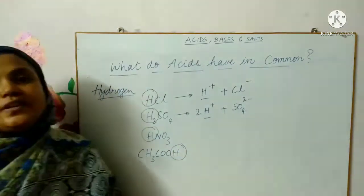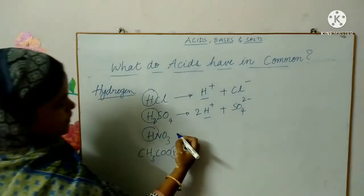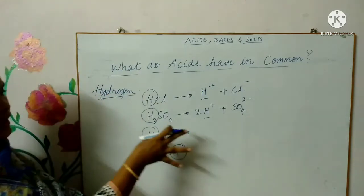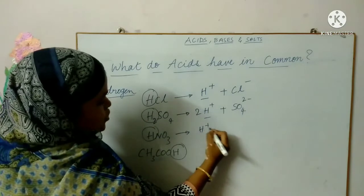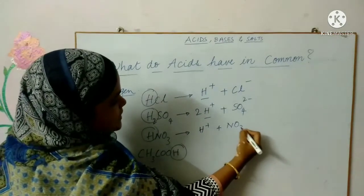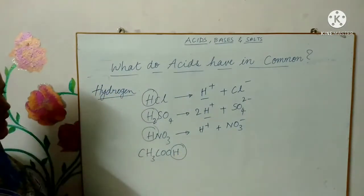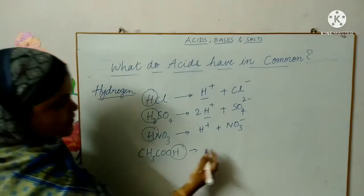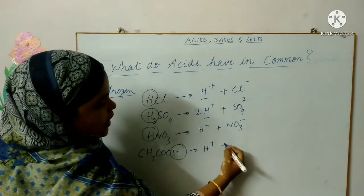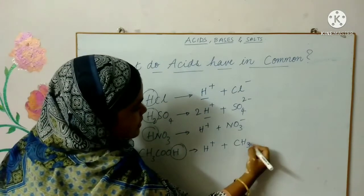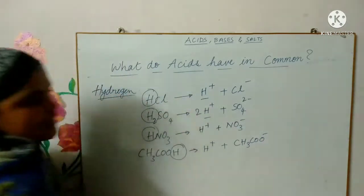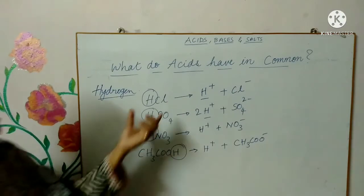Nitric acid also dissociates into H+ and nitrate ion. This is a nitrate ion. And acetic acid also ionizes into H+ and what is remaining here is called an acetate ion. So this is how all the acids have dissociable hydrogen.